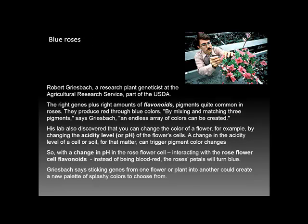This is a photo of a research plant geneticist at the USDA named Bob Griesbach, who has done a lot of research with flavonoids, pigments that are common in roses. By mixing and matching these pigments, he says an endless array of colors can be created. You can change the color of a flower by changing the acidity level or pH, though it is not going to produce a permanent change in the genetics of the plant.